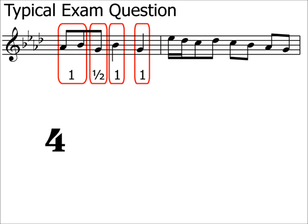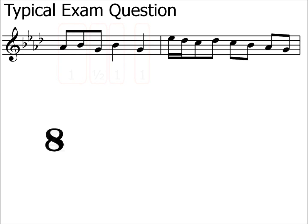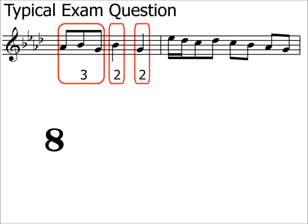Let's try quavers — so an 8 at the bottom of our time signature. There are three quavers at the very start of the bar. The next two crotchets both contain two quavers each. Therefore, there are seven quavers in the bar. We've already deduced that the answer would be an irregular time signature, so we place 7 at the top. Our answer is 7/8.